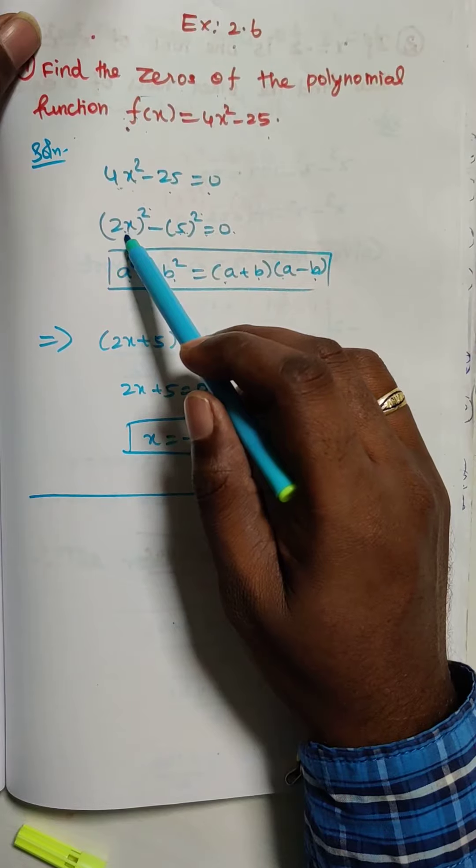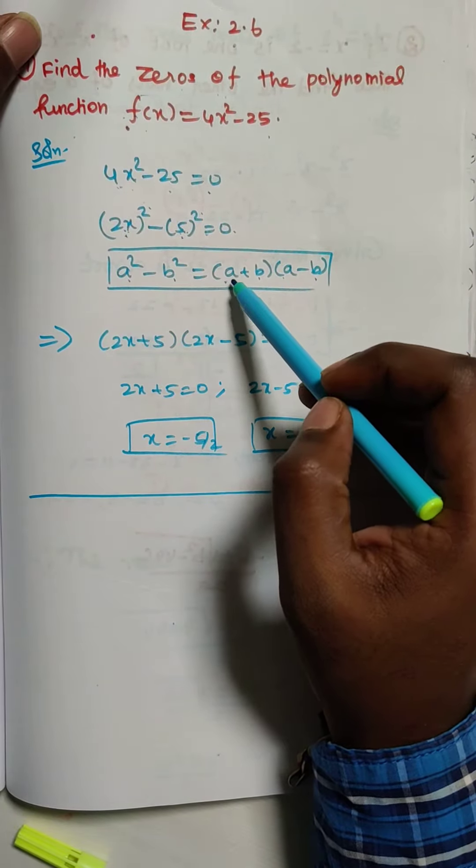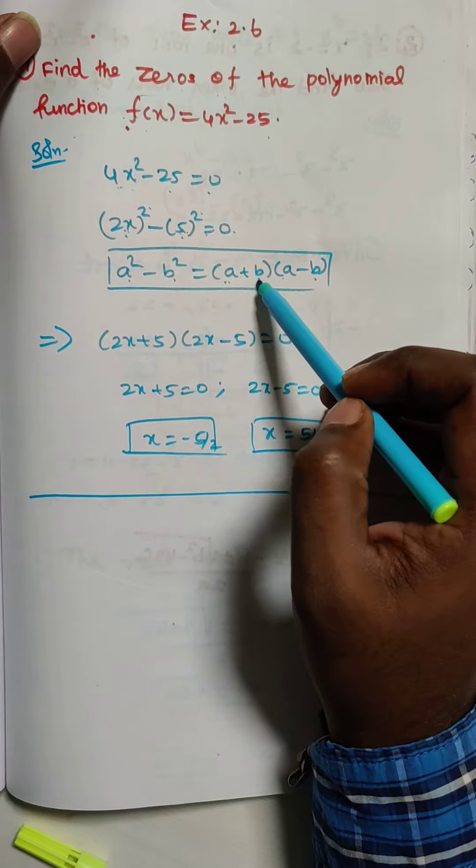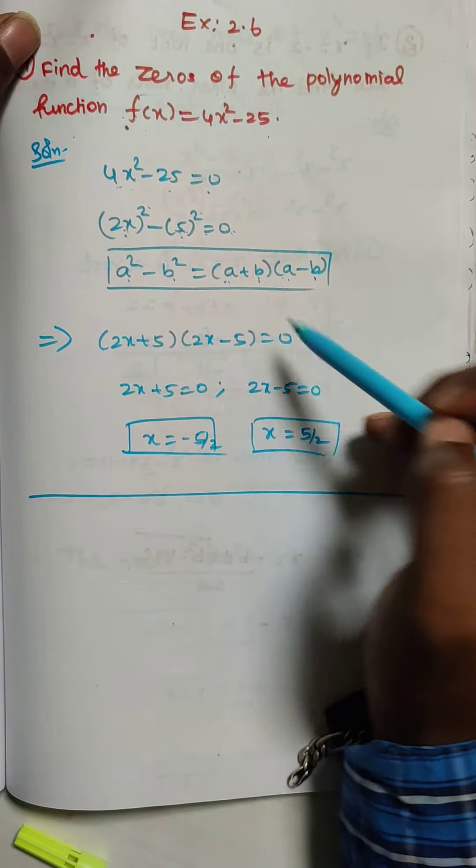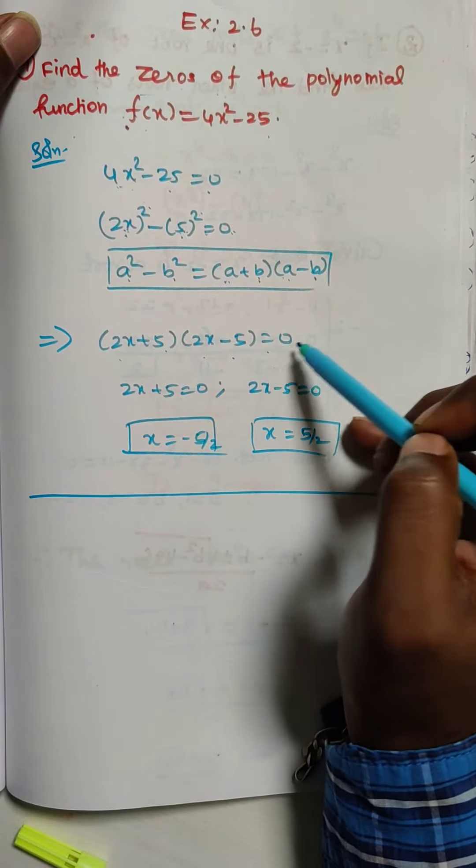Here a value is 2x and b value is 5. So I am going to substitute here: (2x + 5)(2x - 5) = 0.